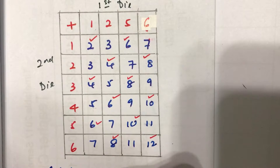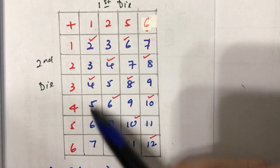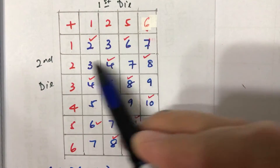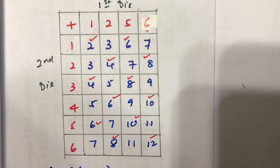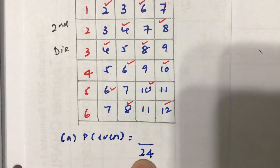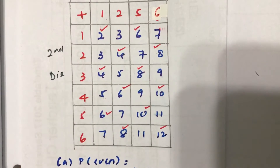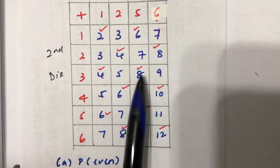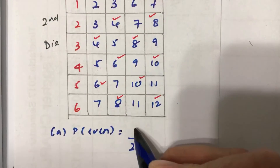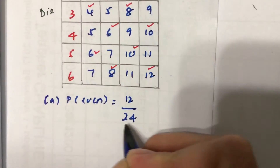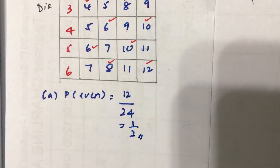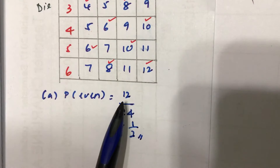We can now find the probability of getting an even sum. Altogether, this die has 4 numbers and the other has 6, so we have a total of 24 possible outcomes. We counted 12 numbers where the sum is actually even, so we have 12 out of 24. Both numbers are divisible by 12, so we can reduce it, and the answer is just one half. You don't have to do any form of calculation — it's really a matter of just counting it out.